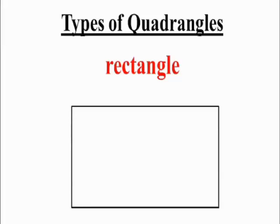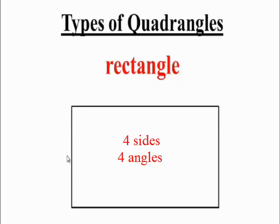In this lesson we're going to talk about different types of quadrangles. A quadrangle is a shape that has four sides and four angles. That's why we call it a quadrangle.